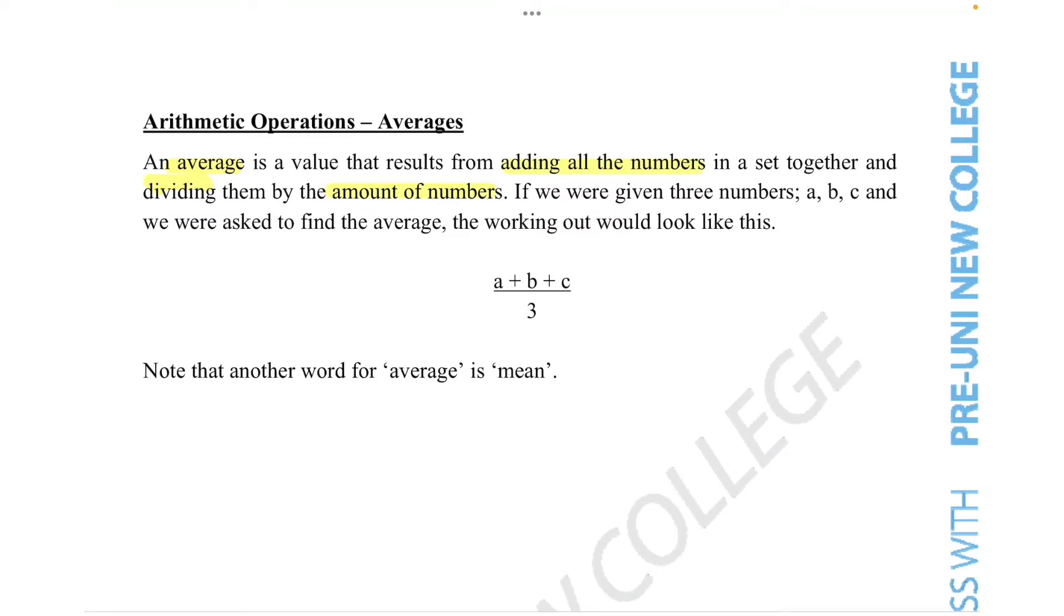If we were given three numbers a, b, and c, and we were asked to find the average, the working out would look like this: a plus b plus c over 3.